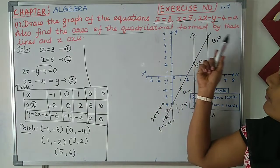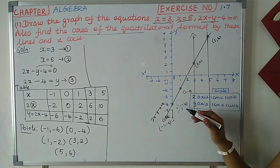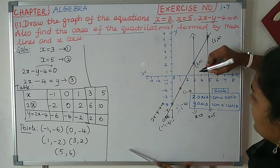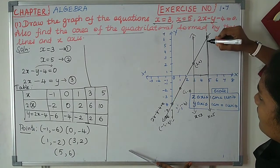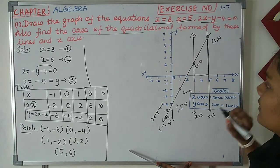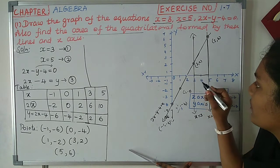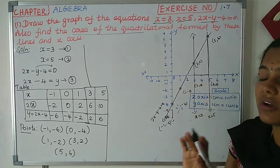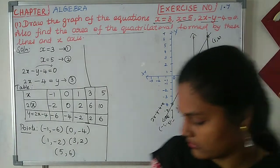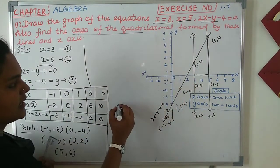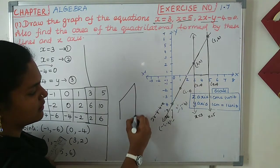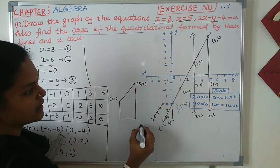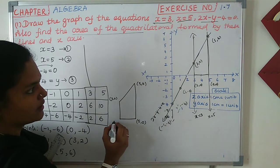The area of the quadrilateral formed by these lines will be calculated. Looking at the points of the quadrilateral: the points are (3, 2); the points are (5, 6); the points are (5, 0); the points are (3, 0).